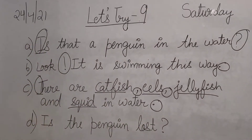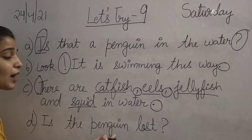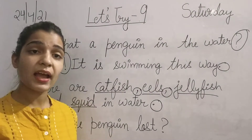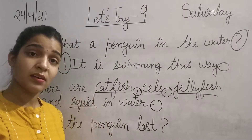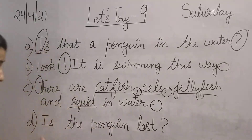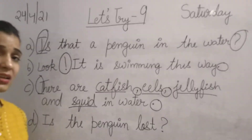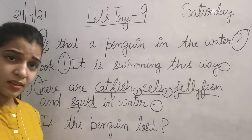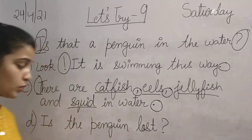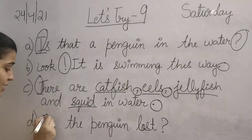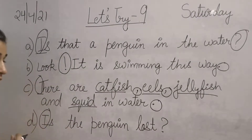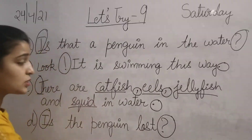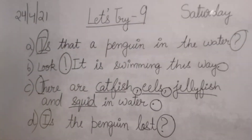The next sentence is: 'Is the penguin lost?' — Kia penguin gum ho gaya? It means someone is asking the question. So the first letter is capital — circle it. And at the end there is a question mark. All these are punctuation.